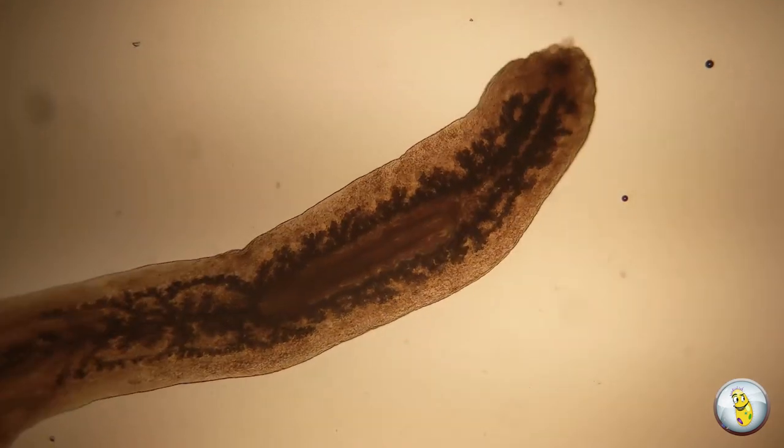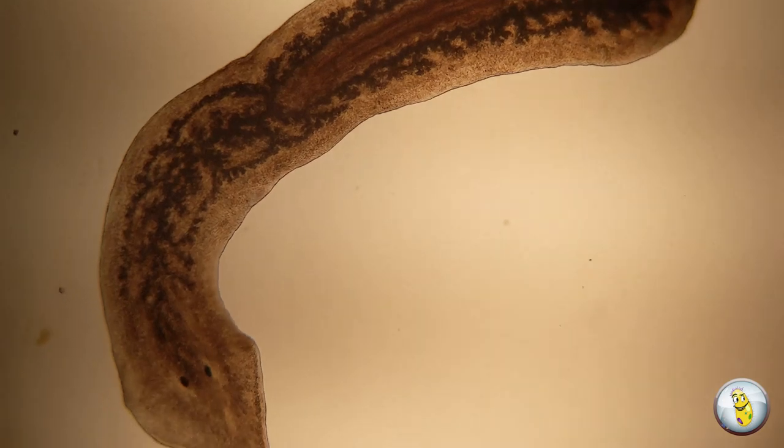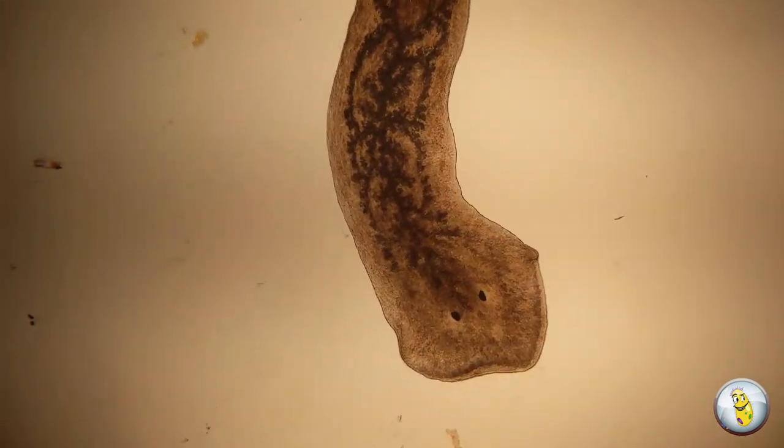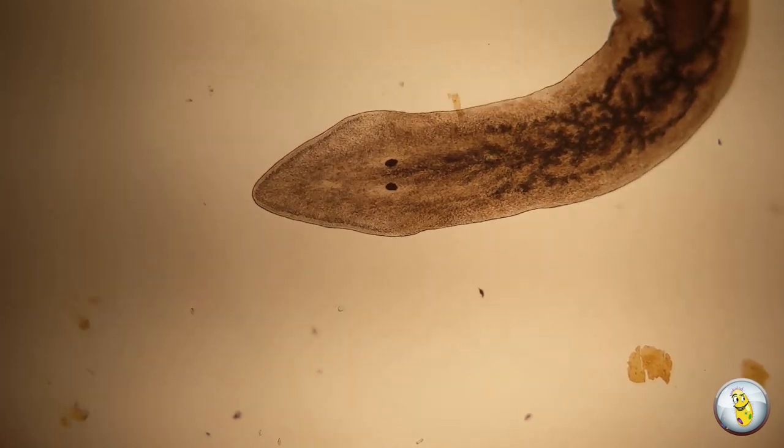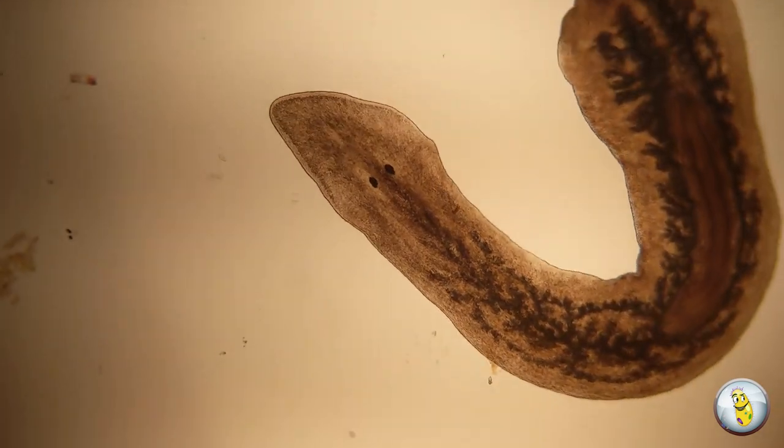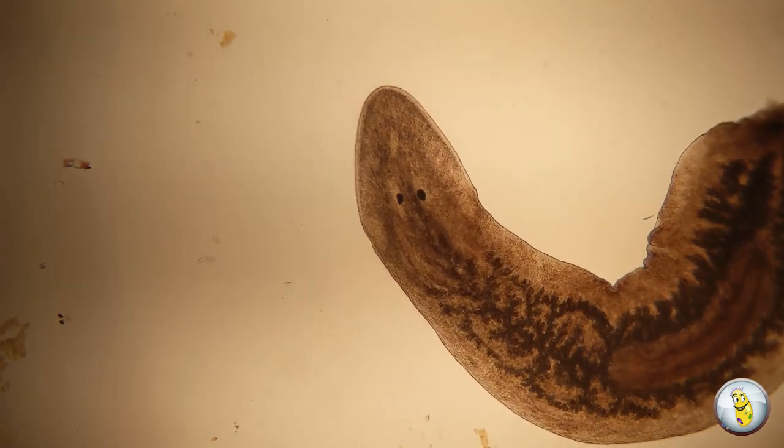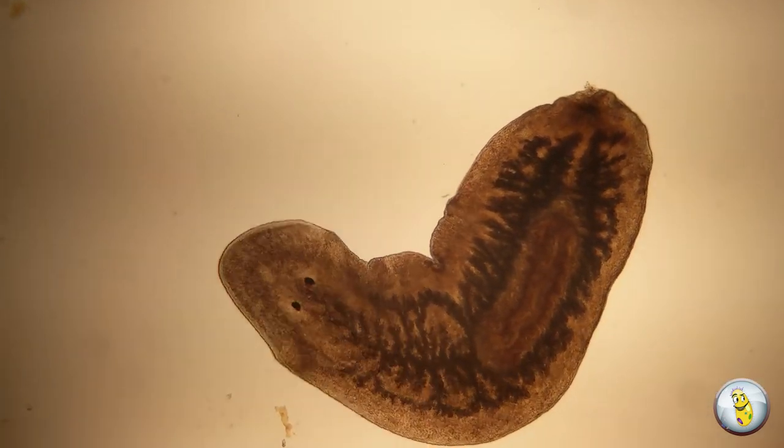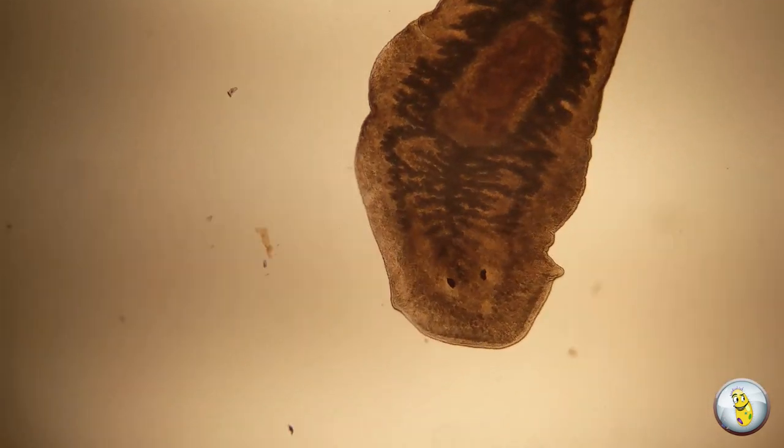I'd planned on rambling on a little bit about how planarian is a common name that encompasses a whole bunch of genus and species, how they can be found in freshwater and saltwater. There are even terrestrial species, and they're found all over the world. But you know what? Let's do some mad science and get down to the real experiment here.